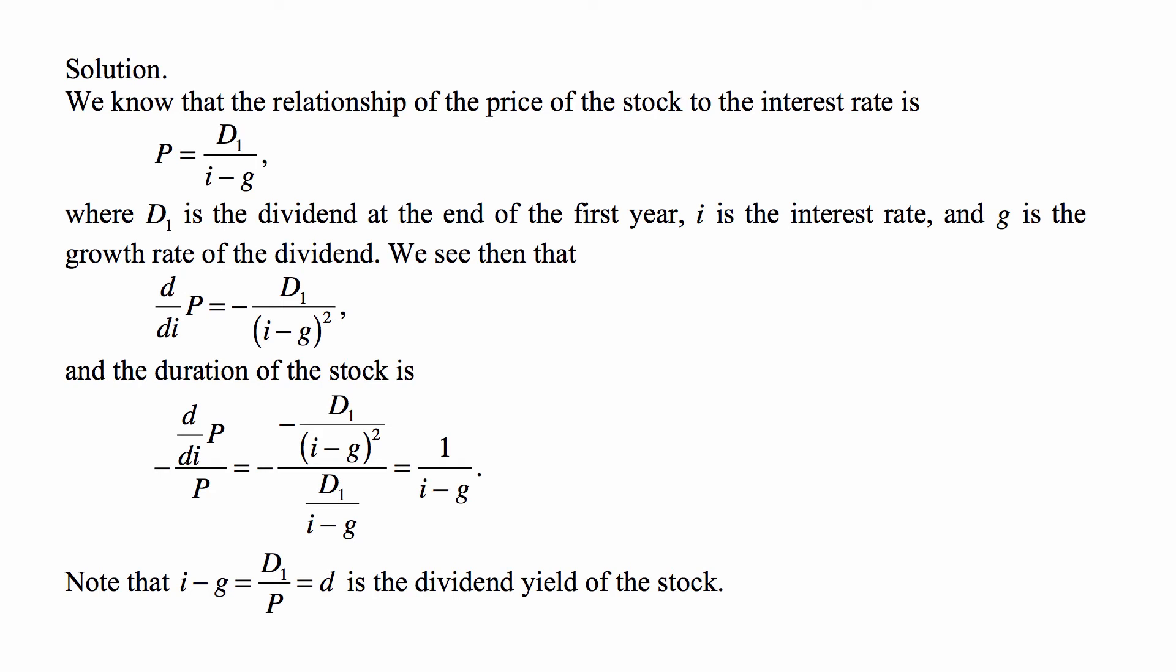So, if we want to understand then what duration and convexity of this security is, we have the formula for the price as a function of interest rate. And we can calculate the first and second derivative. So, the first derivative with respect to I is minus D1 over (I minus G) squared. So, the duration of the stock modeled this way is minus that derivative divided by the price. So what happens is the dividend cancels and the minus and minus cancel and then one I minus G cancels and you are left with one over I minus G.